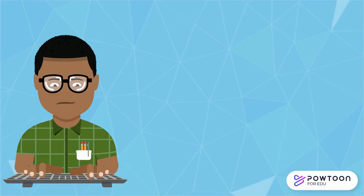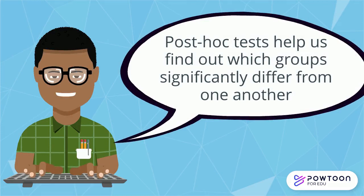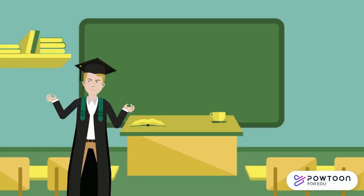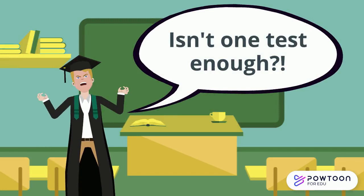While an ANOVA lets us know whether there are significant differences between groups, a post hoc test allows us to look at which groups significantly differ from one another. You might be thinking why we need to run another test after we've just carried out a test. If we've got a significant result in our ANOVA, can't we just leave it at that?